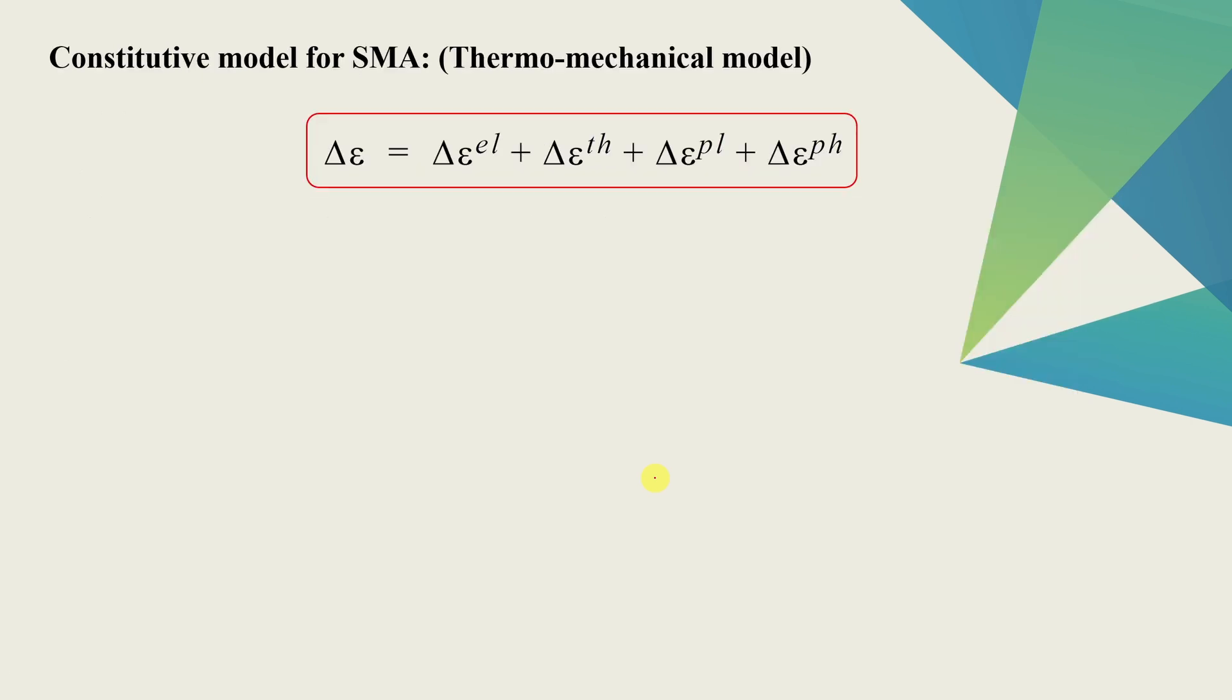Now the main part. In MARC, the total strain for SMA will be divided into four strains. Here it is given in form of strain rate because it is easier to define in that way, but you get the idea. So the first part is elastic strain. Here there is nothing fancy. You can get the relation between strain and stress using Hooke's law.